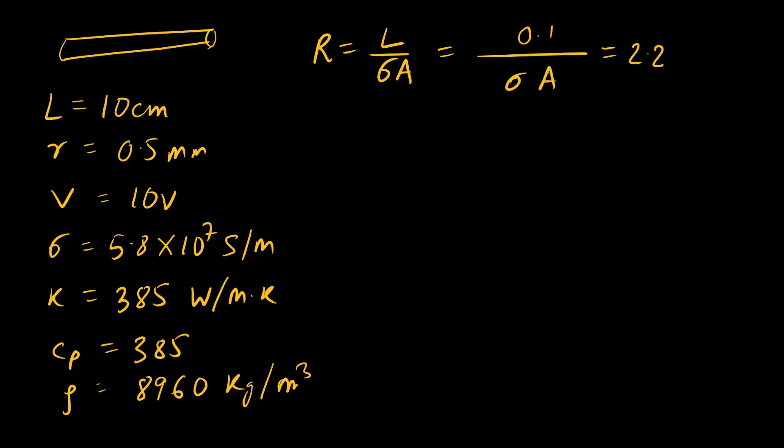Let us calculate the current. I = V/R. Since V is 10 V in our problem, we'll get the current I = 10/R, which gives us around 45.5 A.